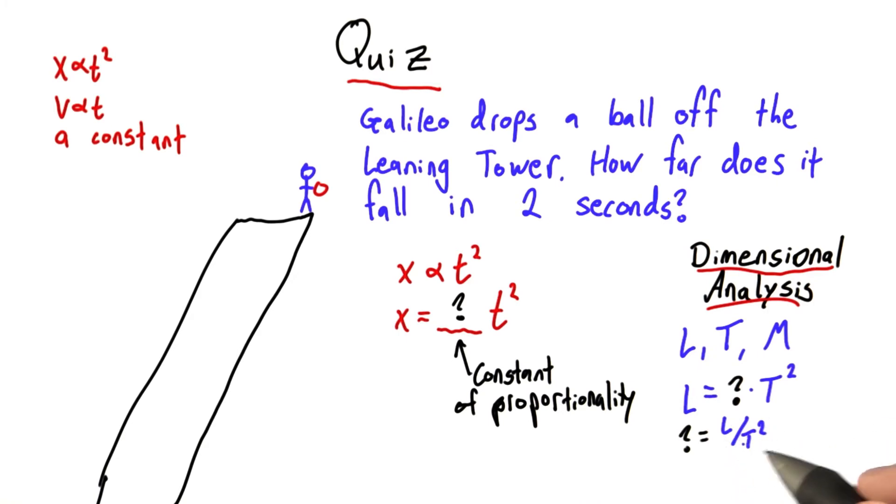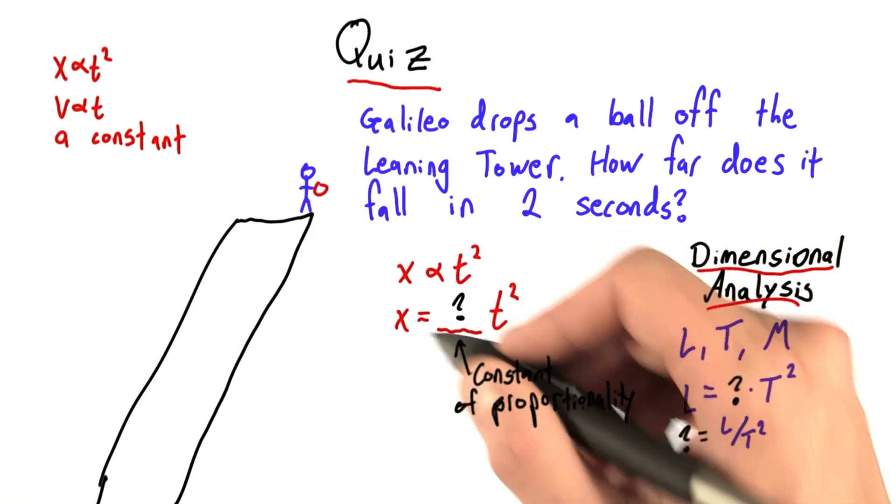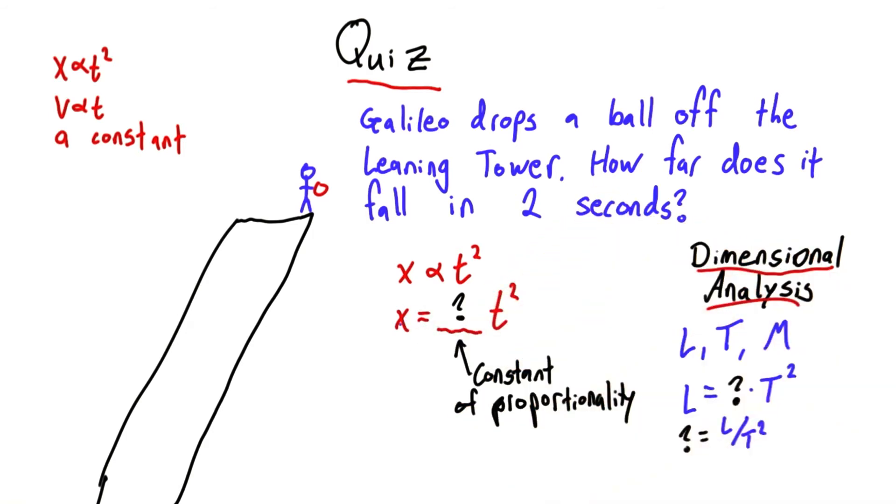And what has units of length over time squared? Well, length over time squared could be something like meters per second squared. And that's acceleration. So this constant of proportionality that relates time and position has units of acceleration. Pretty cool.